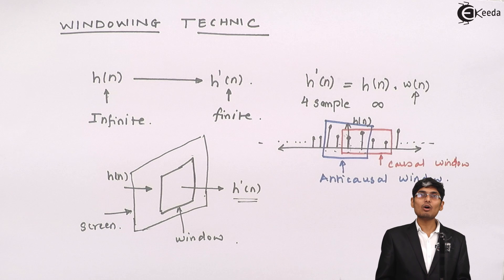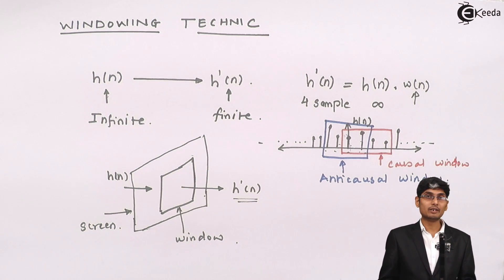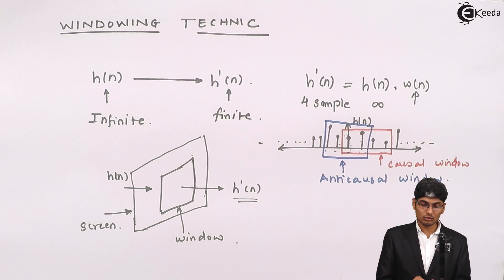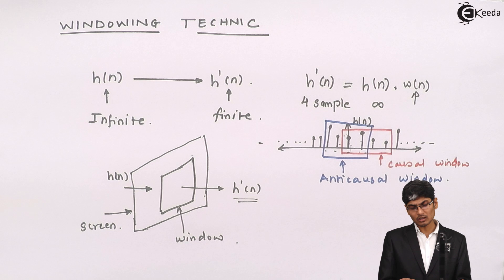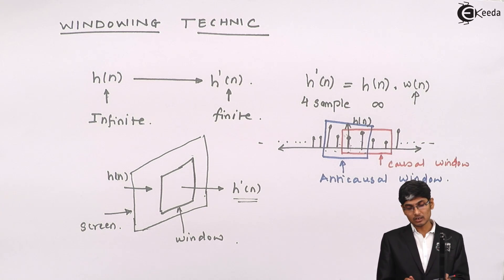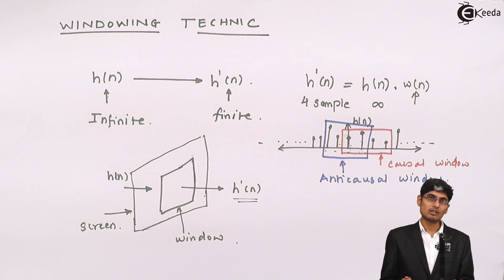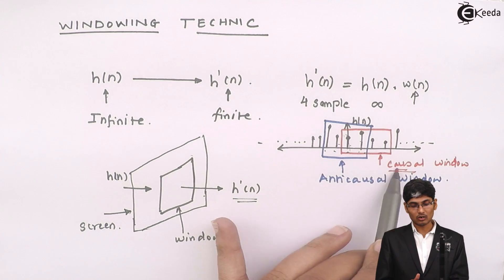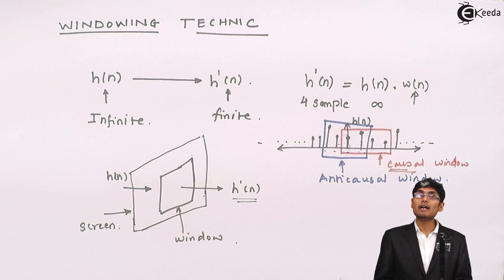In real life, we always use causal window. We will never design an anti-causal window. If suppose you use an anti-causal window then you have to shift the window towards the right to get a causal answer. We will always be using a causal window rather than using an anti-causal window because in real life practice we always go for a causal type rather than going for an anti-causal type.